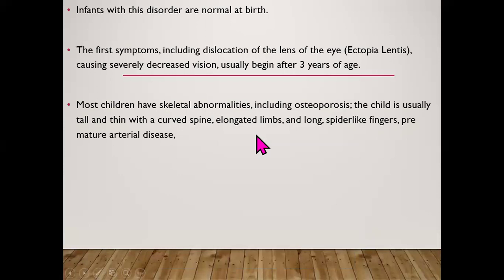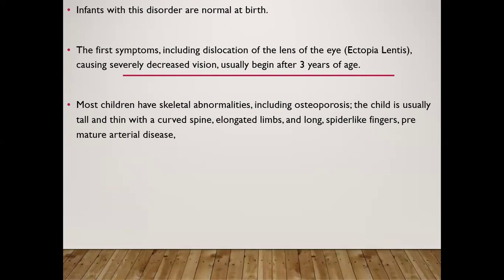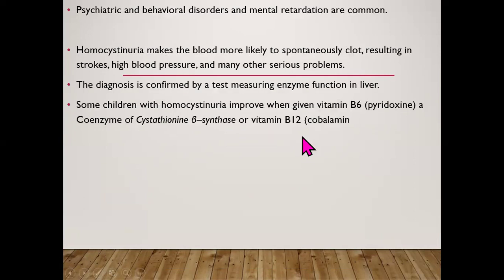Infants with homocystinuria are normal at birth. Symptoms first include dislocation of the lens of the eye (ectopia lentis), causing severe decreased vision, usually beginning after three years of age. Most children develop skeletal abnormalities including osteoporosis; the child is usually tall and thin with a curved spine, elongated limbs, and long spider-like fingers. Premature arterial disease, psychiatric and behavioral disorders, and mental retardation are common.